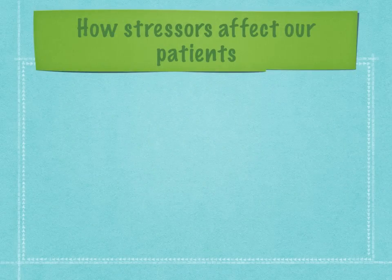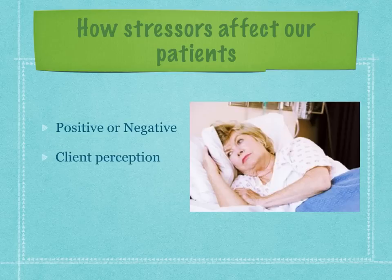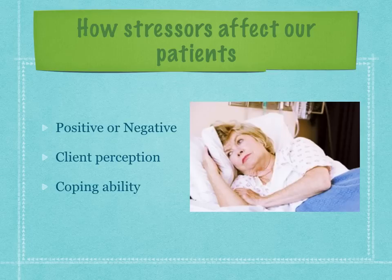Stressors can positively or negatively affect our patients. When they positively affect a patient, these stressors are perceived as positive and the patient refers to them as eustress. When a stressor is perceived by the patient as negative, it is referred to as stress. Client perception and coping ability differ from patient to patient, and it is very important as a nurse to take these facts into consideration when caring for our patients.